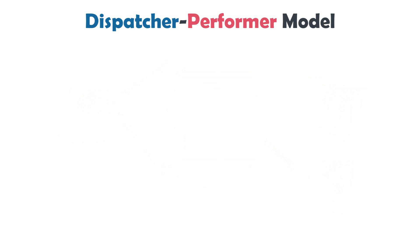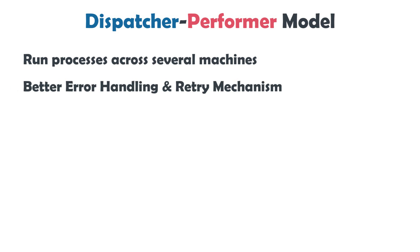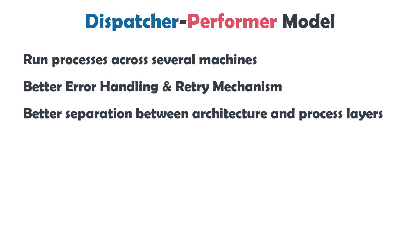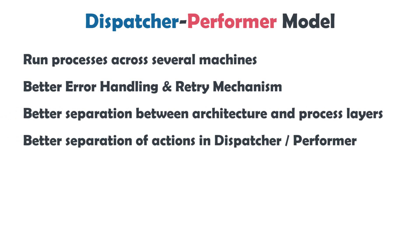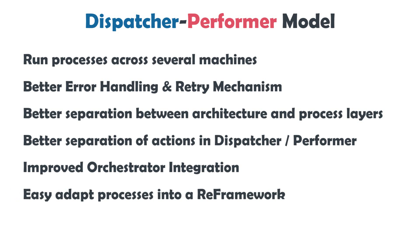These are the first advantages of this model, because we can run the processes across several machines. Using the dispatcher-performer model, we can better handle errors and have a good retry mechanism. We also have better separation between the architecture and the process layers, and better separation of the actions which are in dispatcher or performer. This model gives improved orchestrator integration. And the last and most important advantage is that we can easily adapt these processes into a REFramework, if the processes were created without REFramework.